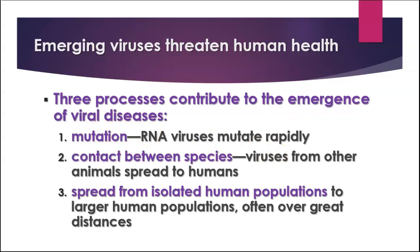What are some things that contribute to viral diseases emerging? One thing is mutation — RNA viruses in particular mutate rapidly, because there's not the normal spell-check mechanism with RNA replication that you have with DNA replication. Contact between species is another factor; there are viruses from other animals that spread to humans, and several we've seen in recent years have made that jump. Additionally, viruses can spread from isolated populations to larger populations, sometimes over great distances because people travel.